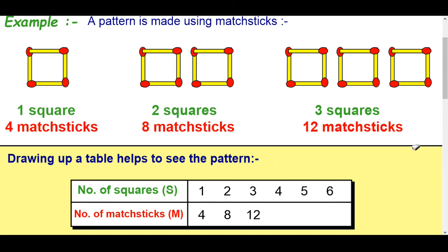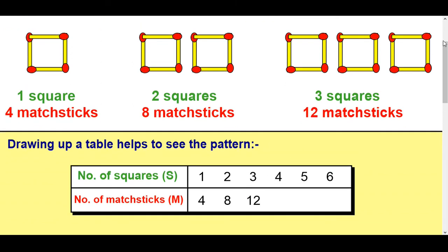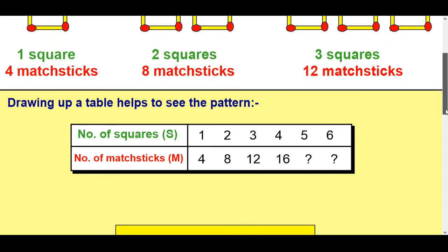Now we can continue the sequence and we can say well if you added another square on here how many matchsticks would you need? Well you would need an extra 4 wouldn't you? So that would be 16. And for 5 you need an extra 4 and I guess that's going to be 20 isn't it? And then 24. So you're adding on 4 each time.